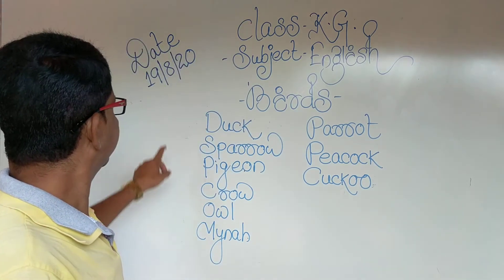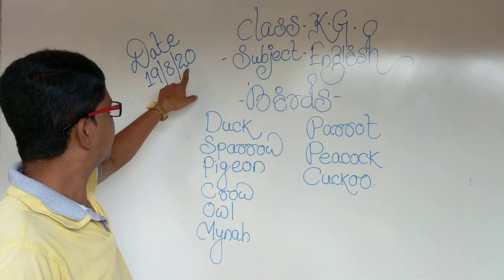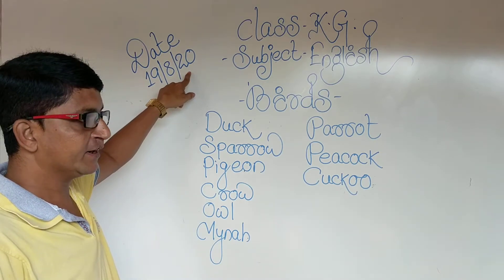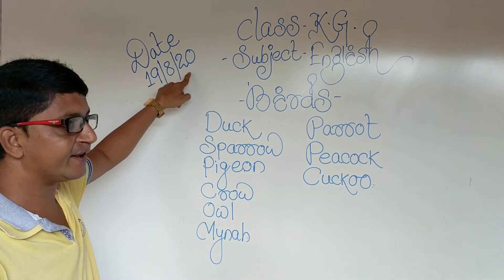Today's date is 19, 8, 20. 19, 8, 20. Day, Wednesday. Day, Wednesday.